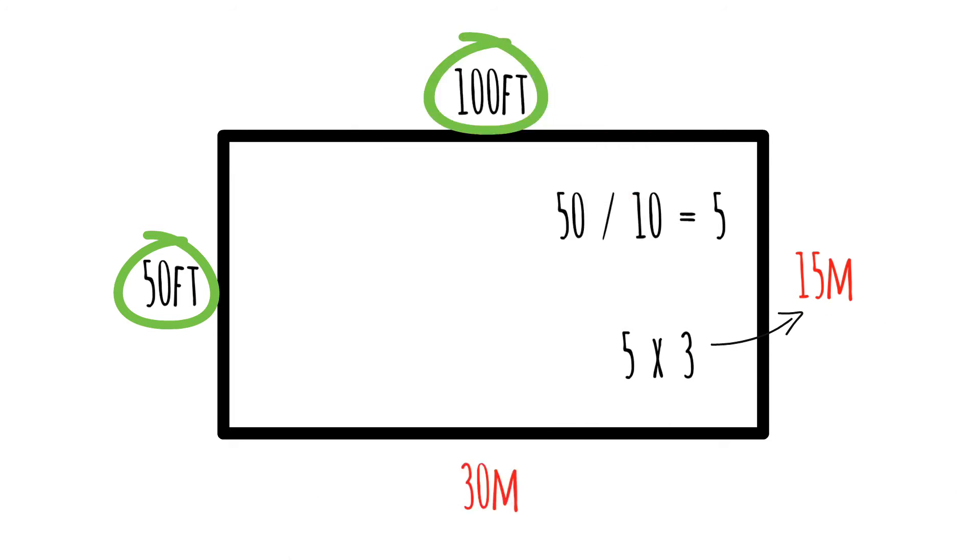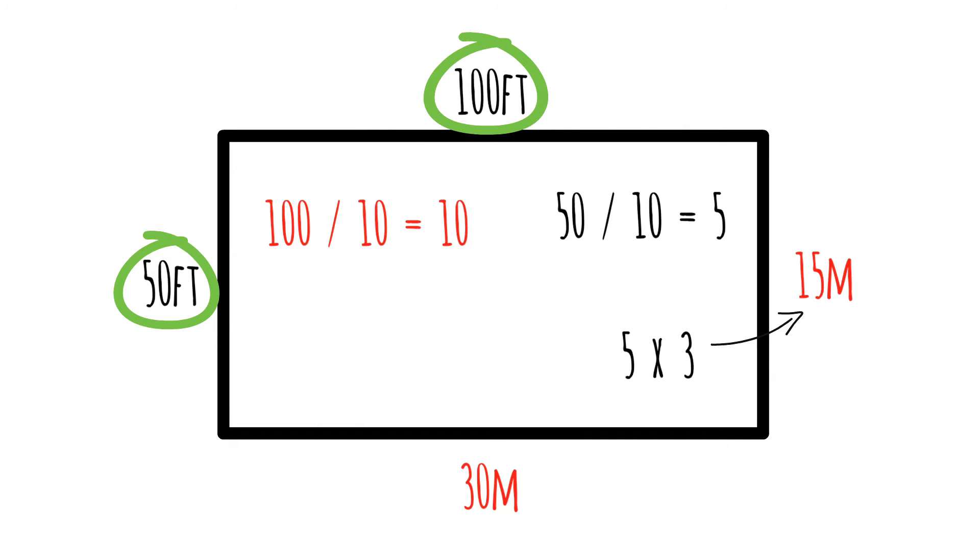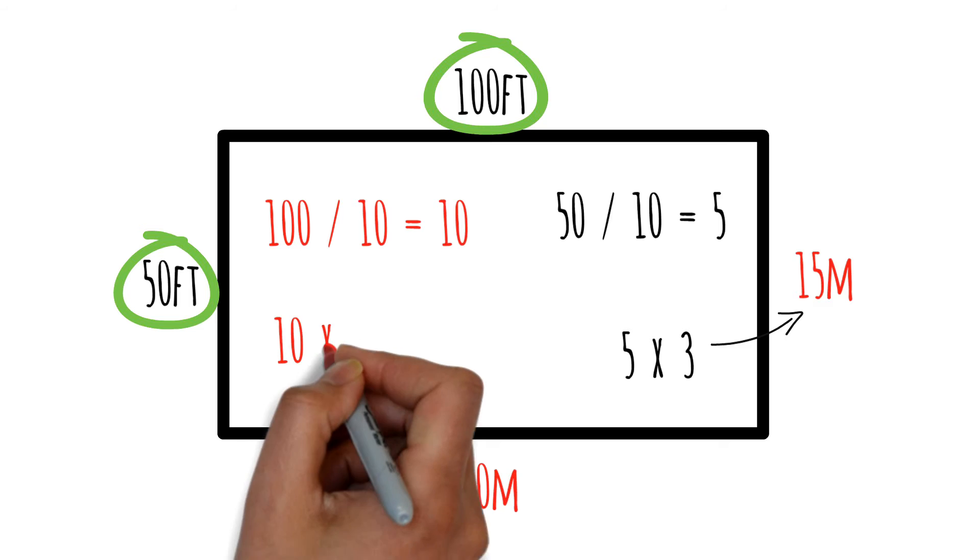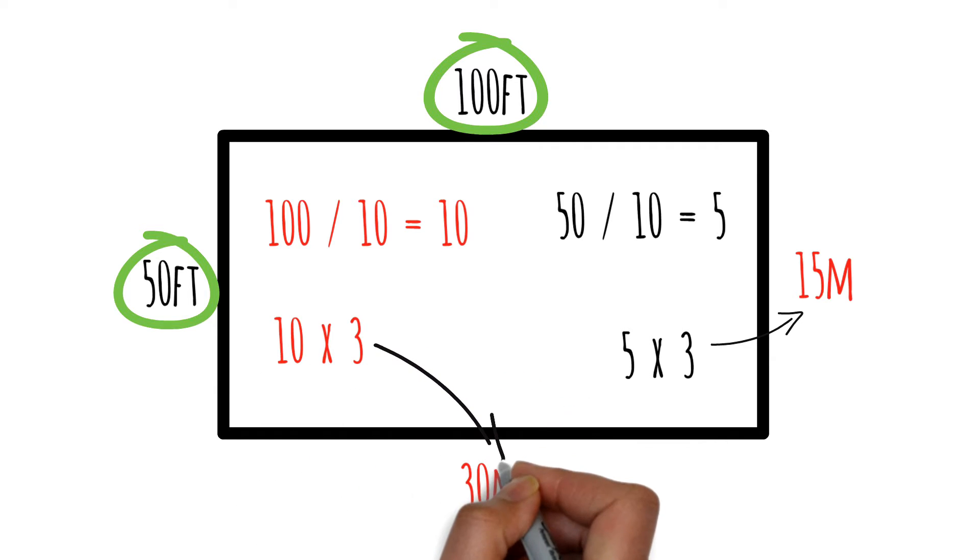Do the same for the length of the plot. Divide 100 feet by 10 to get 10 and multiply by 3 to get 30. The width now becomes 30 meters. So 50 by 100 feet is 15 by 30 meters.